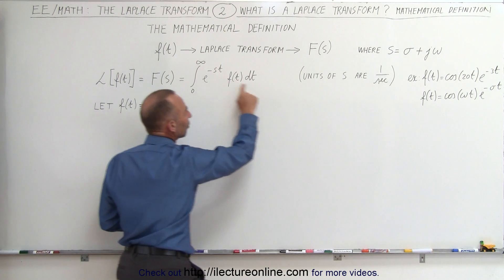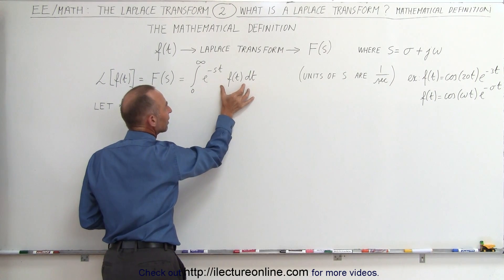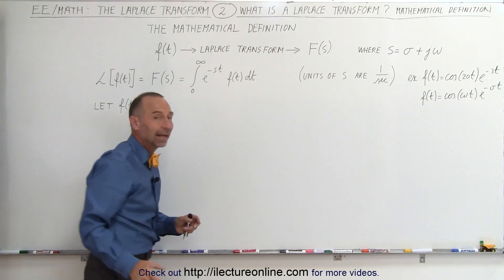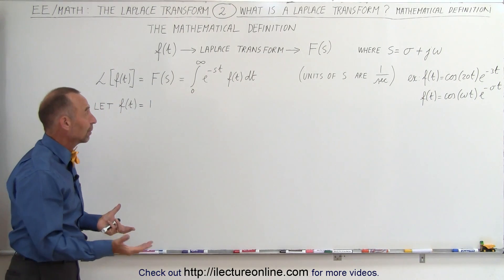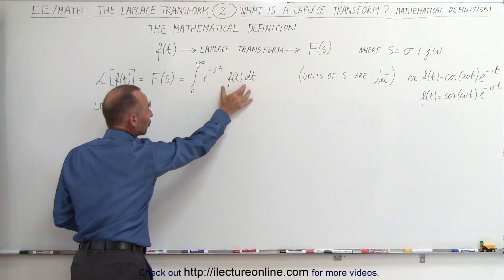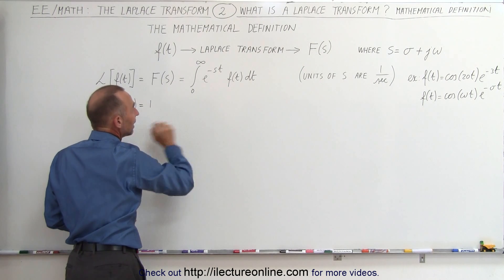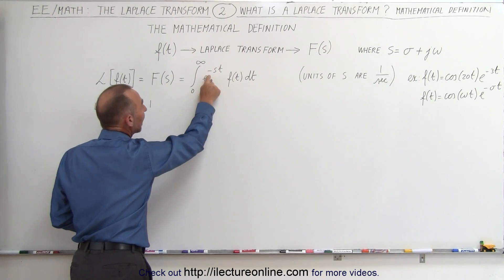So we want to make sure that we include the event that happens at 0 all the way out to infinity of e to the minus st. Remember, s is this variable right here, the complex number, times the function in the time domain dt. And that's what we mean by the Laplace transform. It's simply an integral from 0 to infinity of the function with respect to time, the function in the time domain multiplied times e to the minus st.